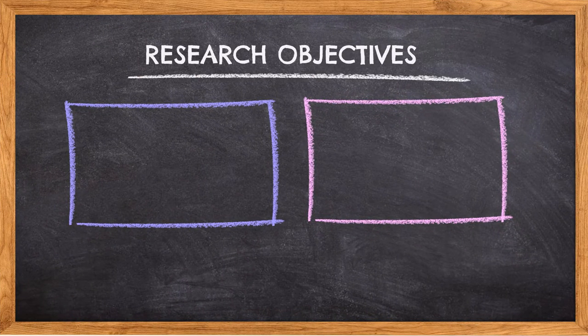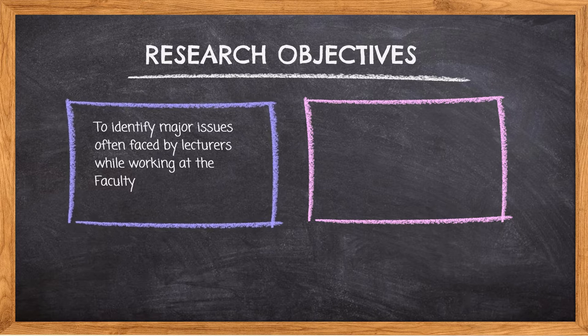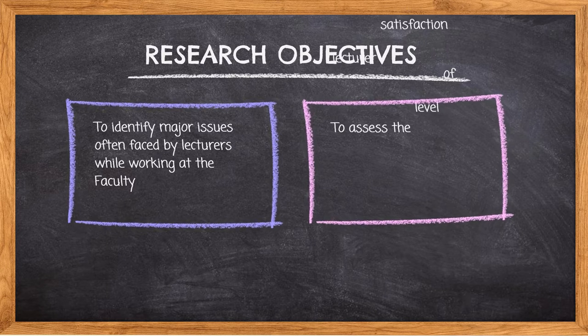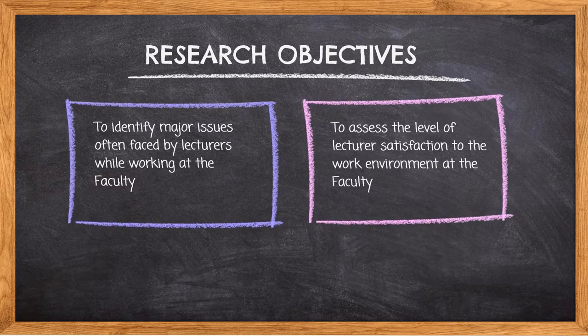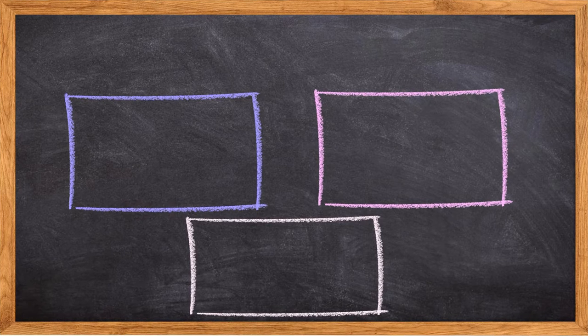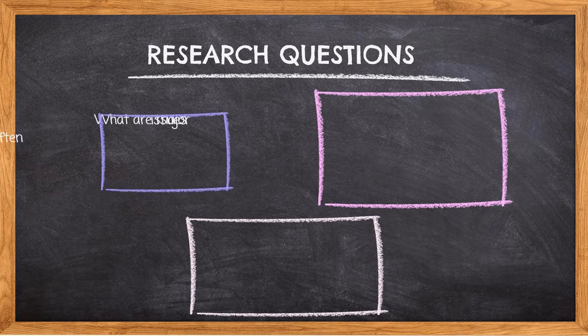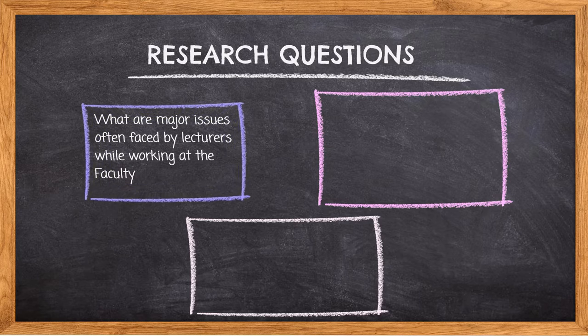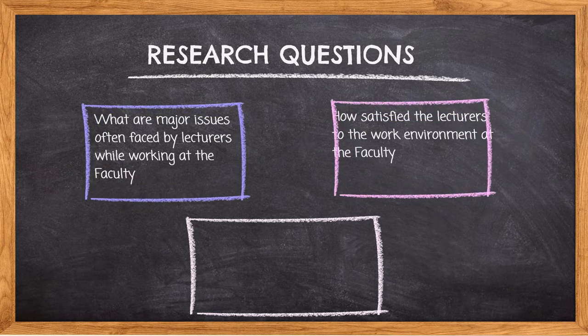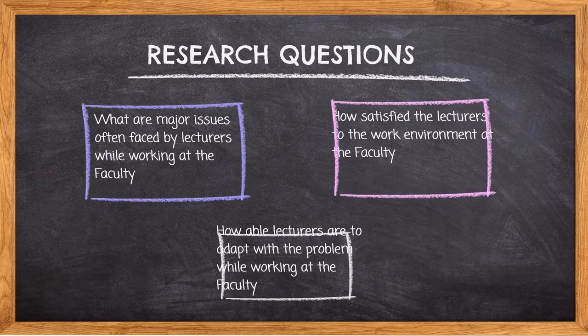Research objectives on this topic are: first, to identify major issues often faced by lecturers while working at the faculty; second, to assess the level of lecturer satisfaction to the work environment at the faculty. Research questions are: first, what are major issues often faced by lecturers while working at the faculty; second, how satisfied are the lecturers with the work environment at the faculty; and third, how able are lecturers to adapt with the problems while working at the faculty.